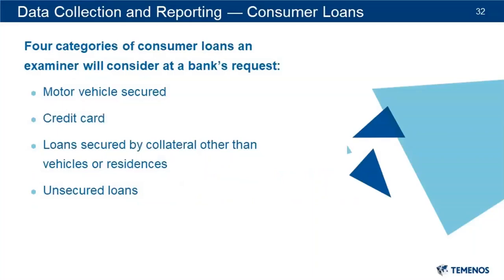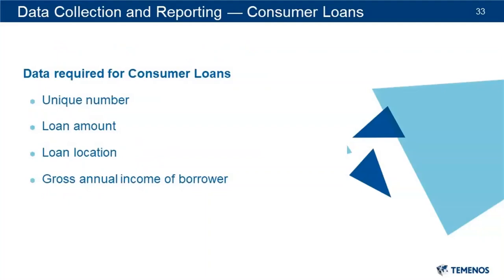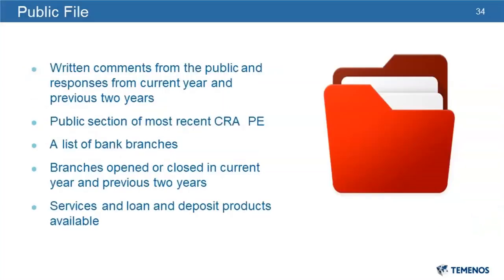For those institutions that choose to have examiners consider consumer loans, there are four categories: motor vehicle secured, credit cards, unsecured loans, and loans secured by collateral other than vehicles or residences. The data required to be reported about those consumer loans consists of a unique number identifying the loan, loan amount, loan location, and gross annual income of the borrower. Institutions are required to have a public file — are the requirements the same for all institutions?